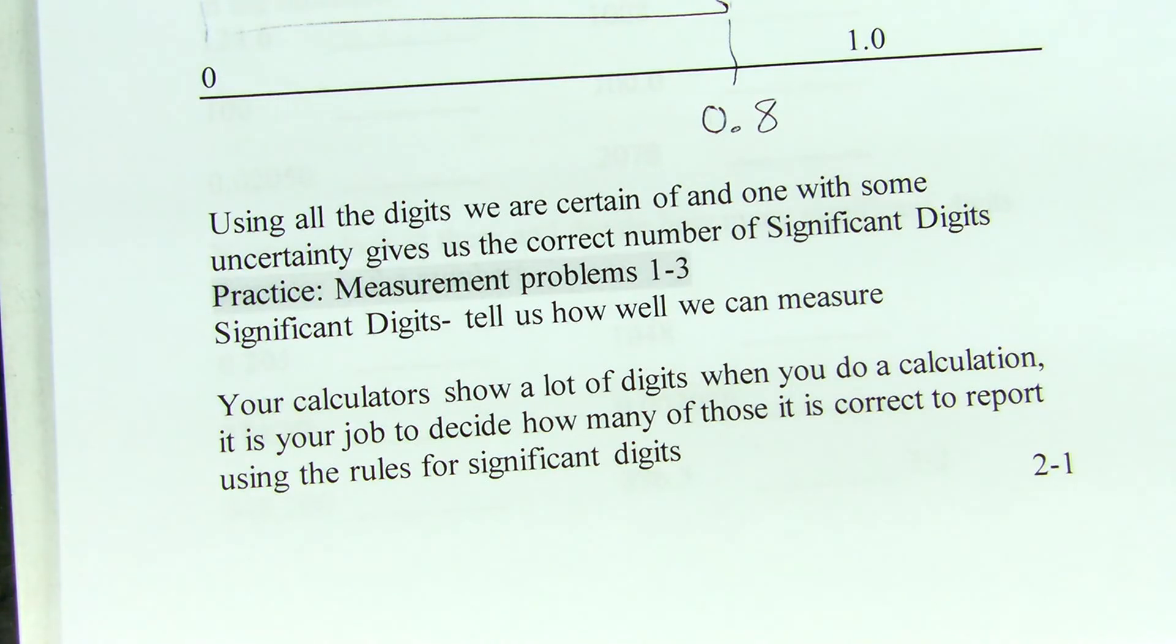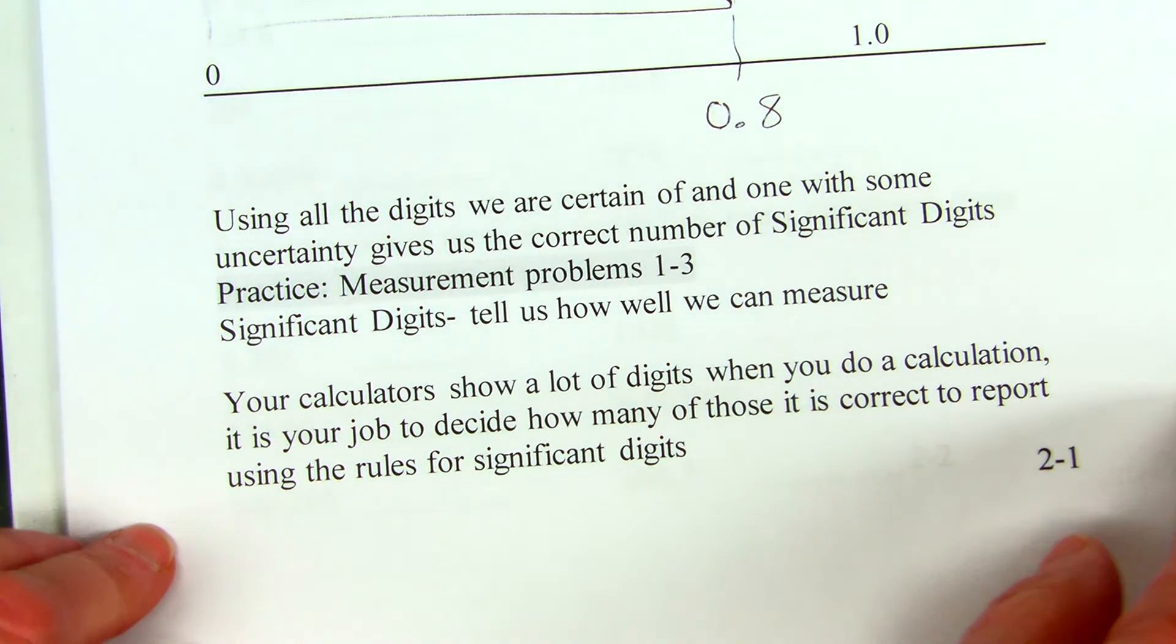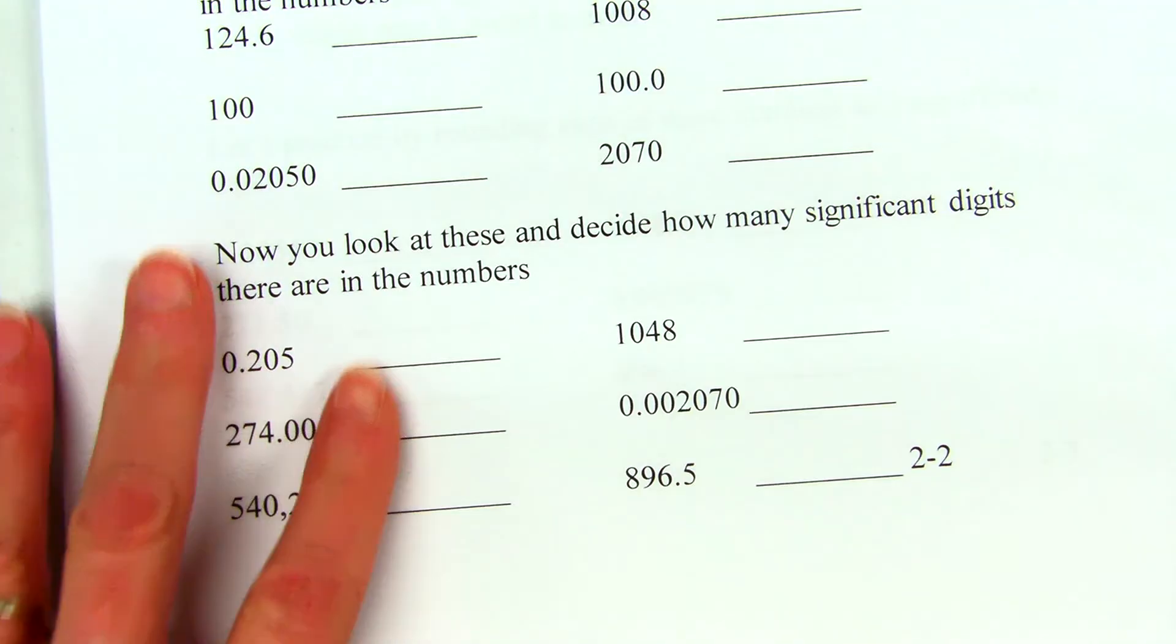So, when we start looking at these, we use our calculators, and they show a lot of digits when you do a calculation. And it is your job as a chemistry student or a science professional as you move on from here to decide correctly how many of those digits can report using the rules for significant digits.